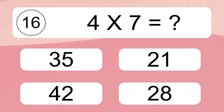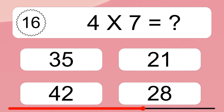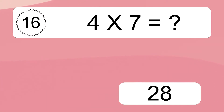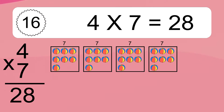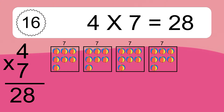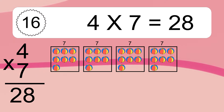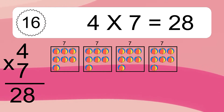Four times seven equals what? Four times seven equals twenty-eight. We have four boxes, and each box has seven colorful balls inside. If you count all the balls in all the boxes together, you will have four times seven balls. This equals twenty-eight balls.